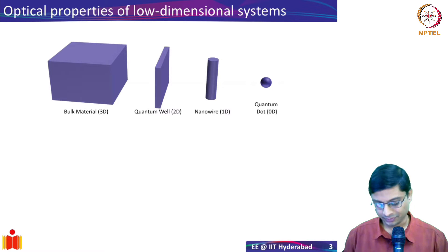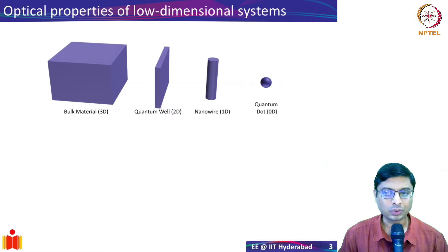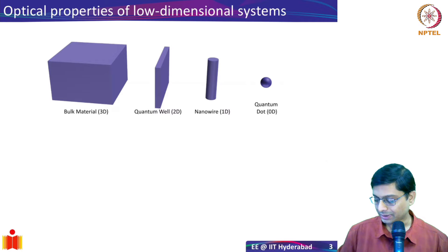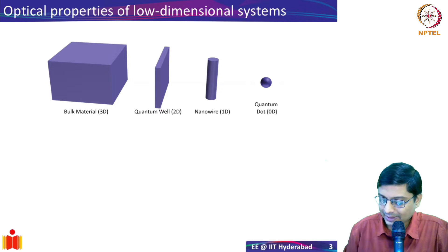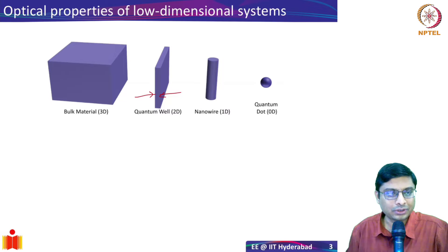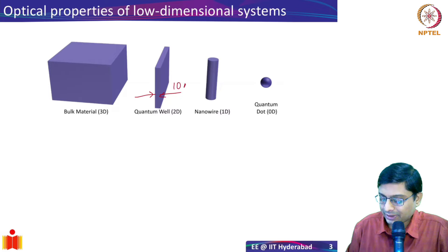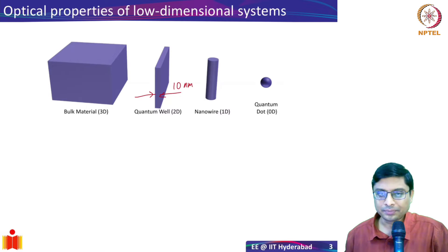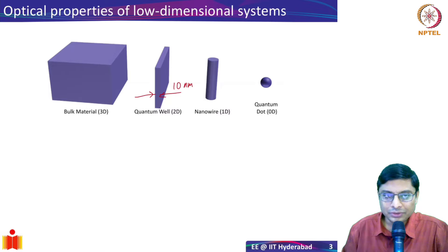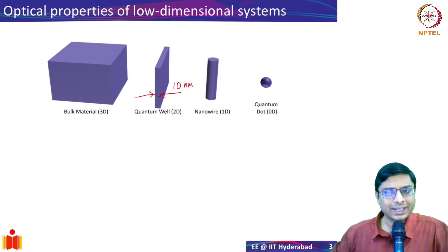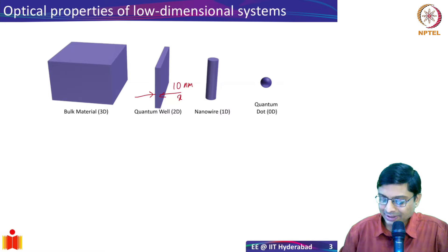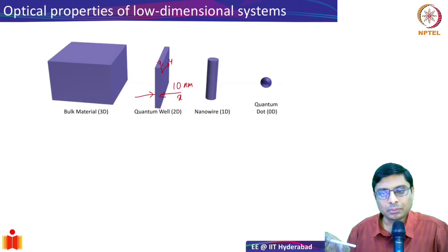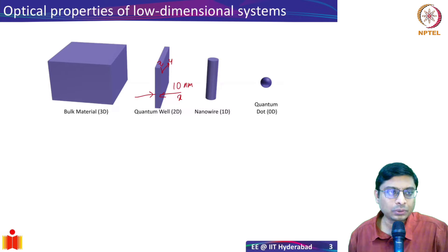But suppose I somehow confine the electrons to move only in a certain plane. Here I am showing you a quantum well — a quantum well essentially confines electrons to move about only in the plane. If I call this my x-axis, and the thickness of this strip is 10 nanometers, the electrons are confined to move only in that 10-nanometer dimension, while they can freely move in the y and z axes.